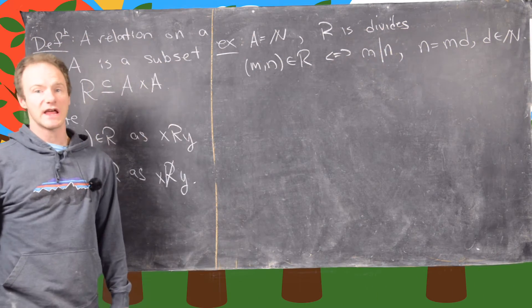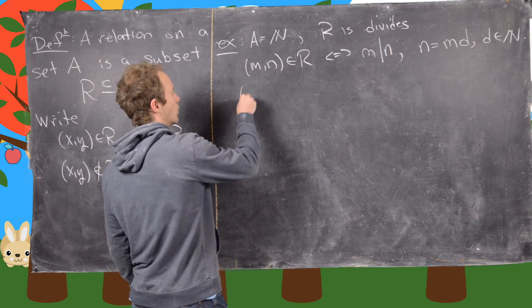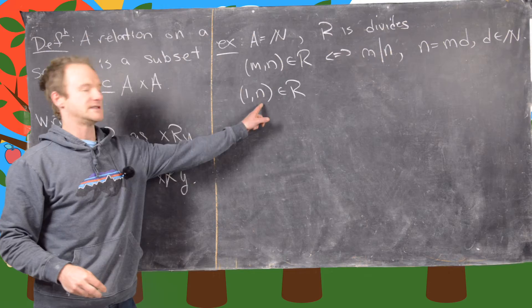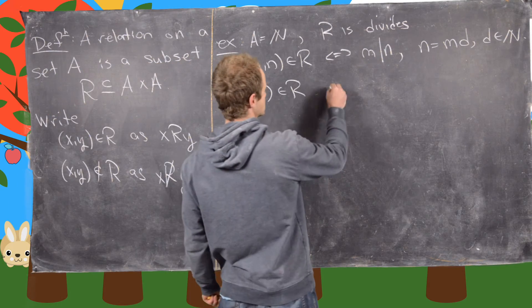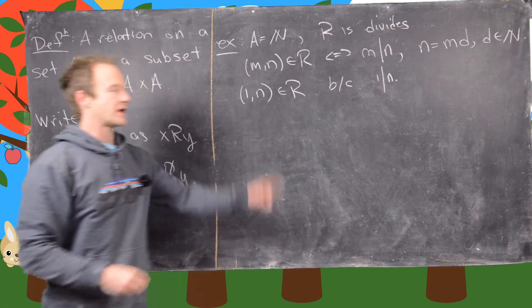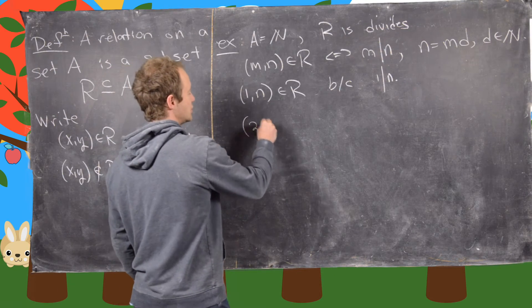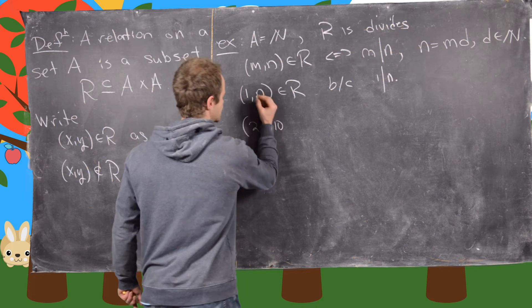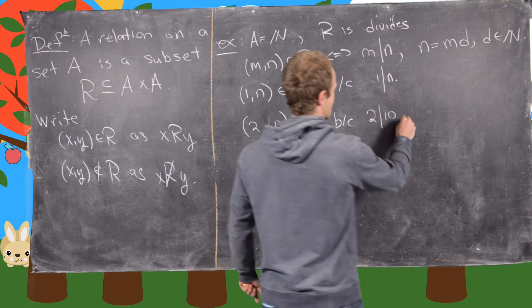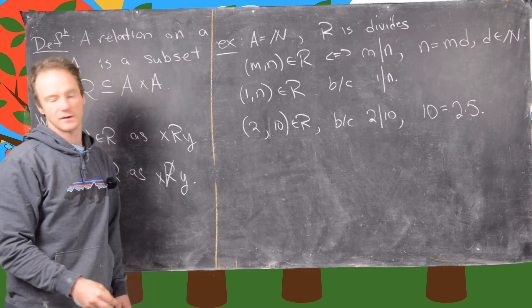So let's look at some examples of things that are in R, in other words, things that are related to each other. And so notice that 1 comma N is in R for all N because 1 divides any natural number. We can write that natural number as itself times 1. And then 2 comma 10 is in R because 2 divides 10. And we can see that because we can write 10 as 2 times 5, and so on and so forth.